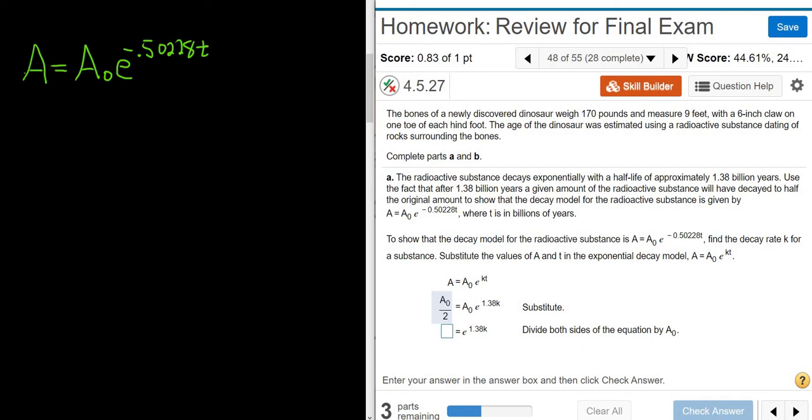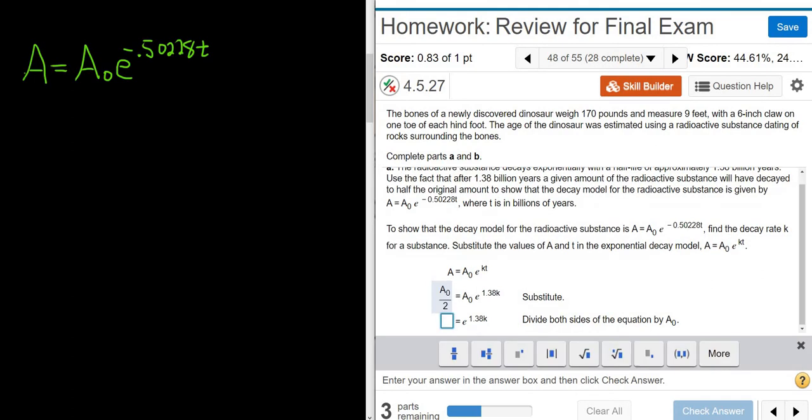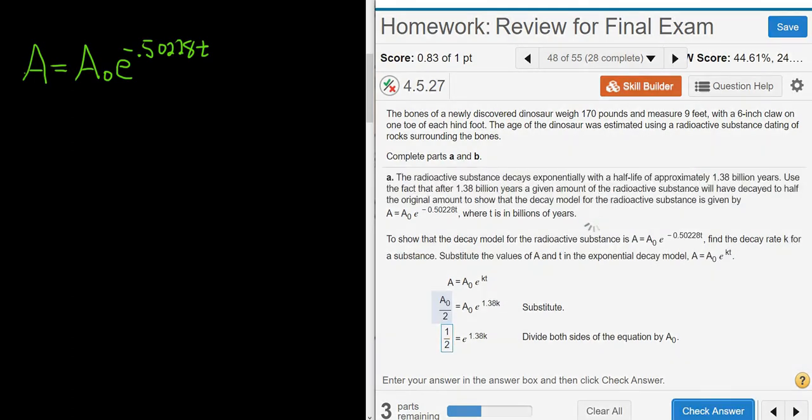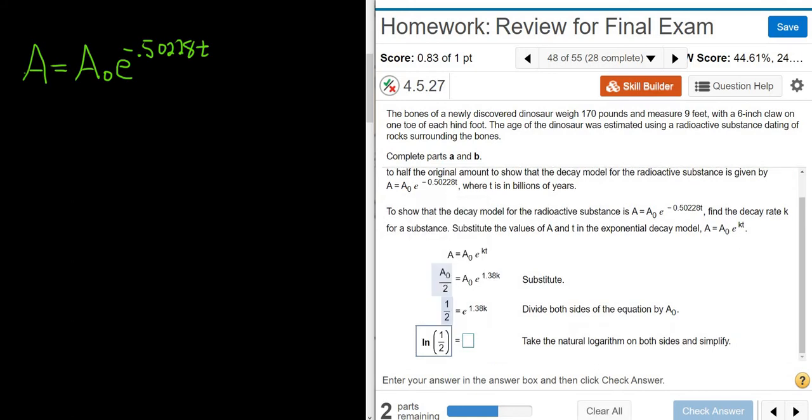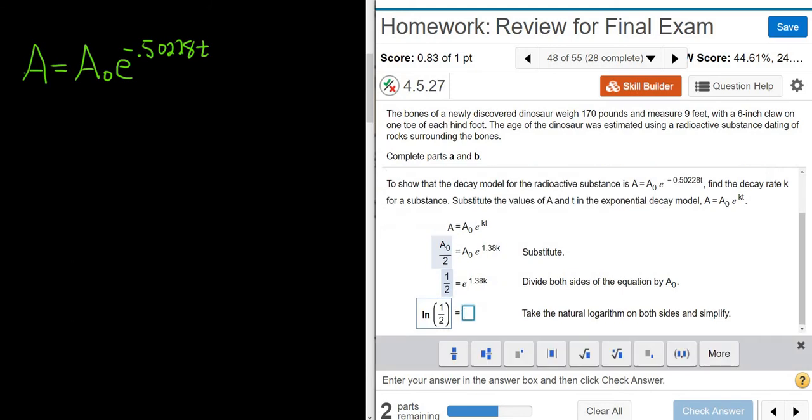Then it says divide both sides by A sub 0. Well, when you do that, the A sub 0s will cancel. So you'll just get 1 over 2. So check answer. Then it says take the natural log of both sides. So on the left-hand side, we'll get the natural log of 1 half. When you take the natural log here on the right-hand side, the E will cancel. And so you'll just be left with 1.38 K.